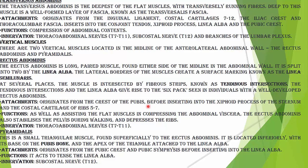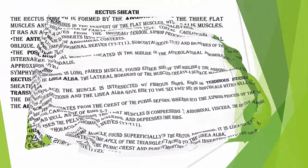Pyramidalis is a small triangular muscle located inferiorly, with its base on the pubic bone and apex of the triangle attached to the linea alba. It originates from the pubic crest and pubic symphysis and inserts into the linea alba. Its function is to tense the linea alba, while the nerve supply is the subcostal nerve.